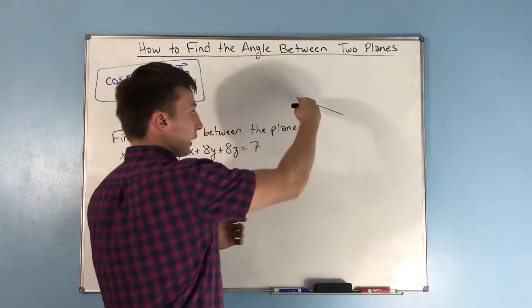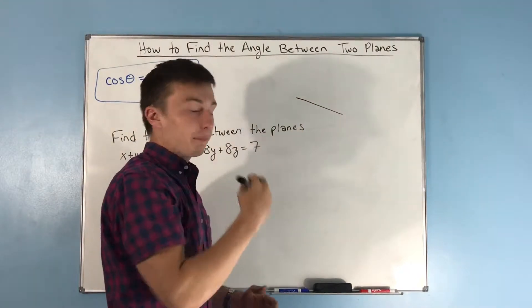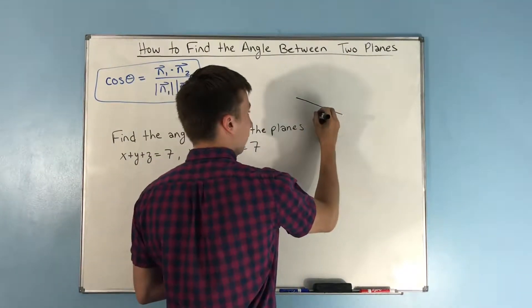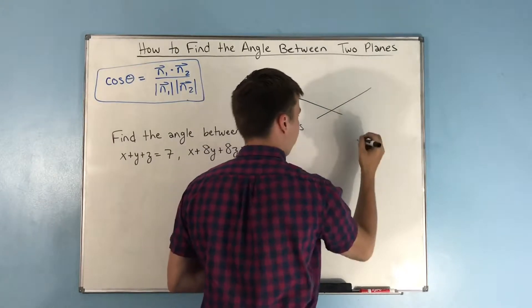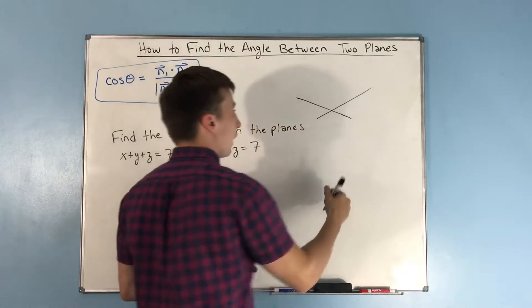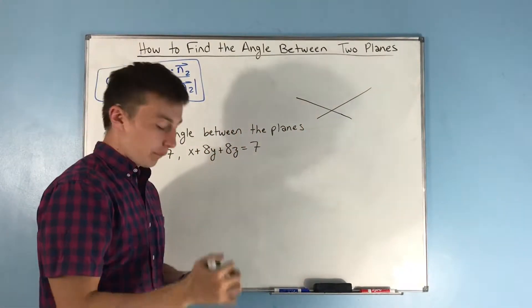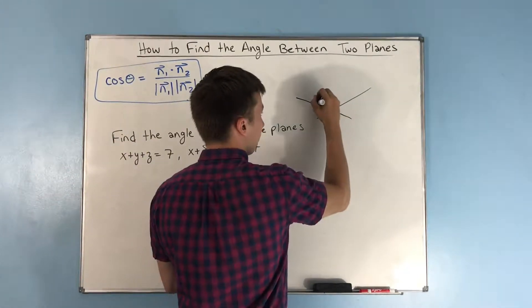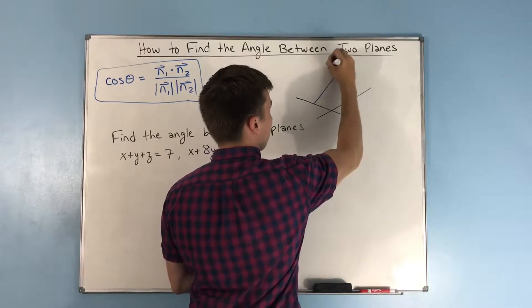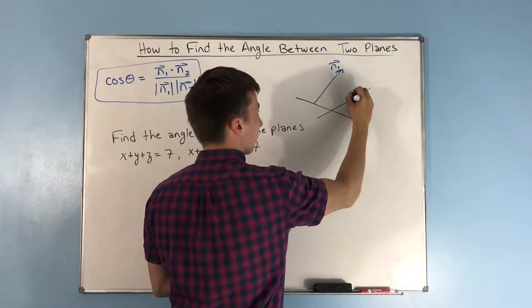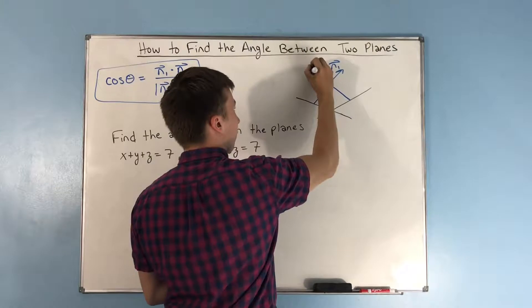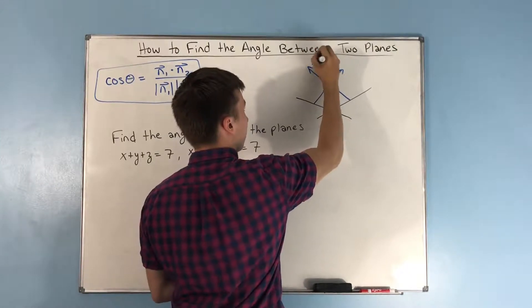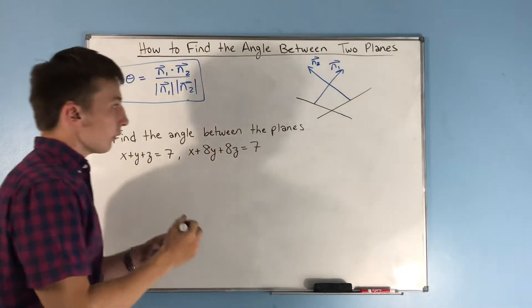Let's say that we have two planes. One's going like this, and let's say it's going in and out of the board. And we have another plane, and it goes like this, also going in and out of the board. Well, we have two vectors that are going to be normal to that. We have our vector, this is going to be the first normal vector, and we're going to have the second normal vector right here.